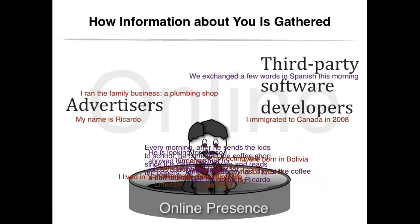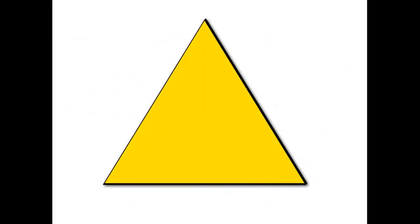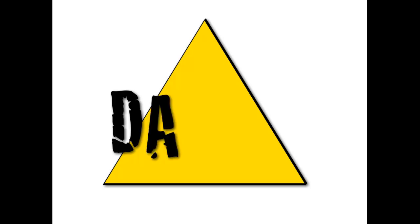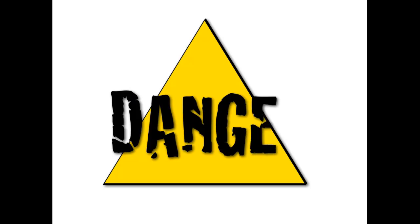Third-party software developers could also access your information to personalize their applications. Remember, most of the free social network sites that you are using make profit by selling advertisements based on behavioral advertising, which is tailoring their ads to the users' interests. While these parties could be considered harmless, you should not take this fact lightly. This information could easily be used by identity thieves or other online criminals such as hackers who could access some personal information — for example, accessing your address from the by-default geotagging service linked to the photos you share online.